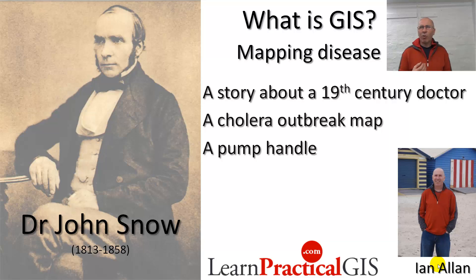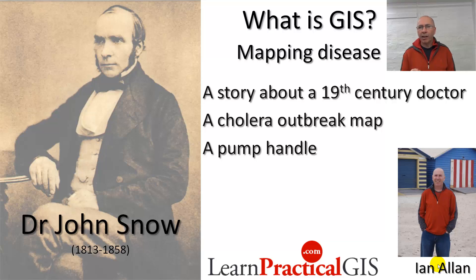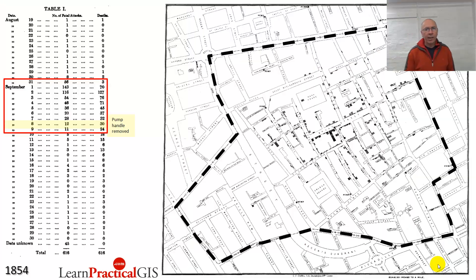It's actually not quite that simple. What I want to do is take you through the mapping exercise that he undertook. Because once again, it is the sort of mapping exercise you would undertake in a geographical information system even now. The big point I want to make is that there are anomalies in the mapping that John Snow made the effort to find out about and explain, which made his case even stronger.